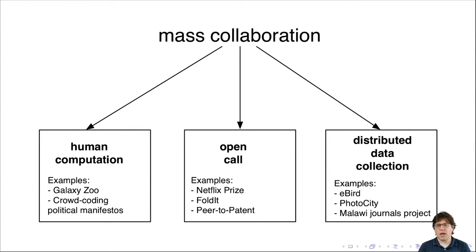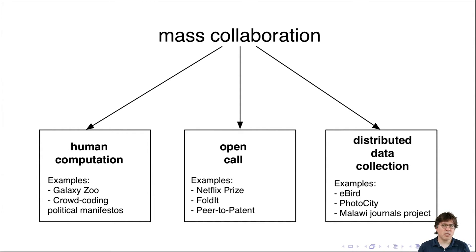The third type of mass collaboration is what I call distributed data collection. Here you have volunteers out in the world collecting new measurements and sending those back to you. Each of these buckets has examples, and in the next series of videos I'll tell you about them to illustrate the exciting opportunities in each of these three areas.